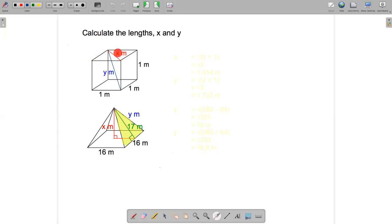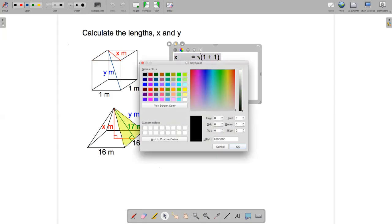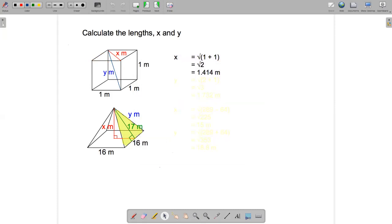And so x squared will be one squared plus one squared. So x will be the square root of one plus one. And that comes to the square root of two, which is 1.414 meters.